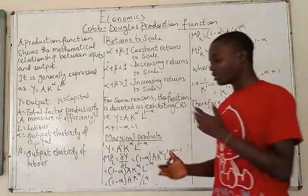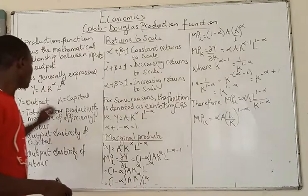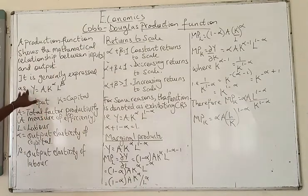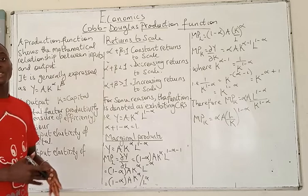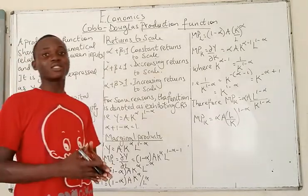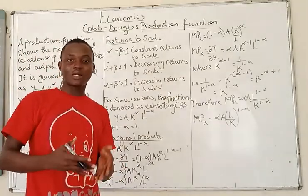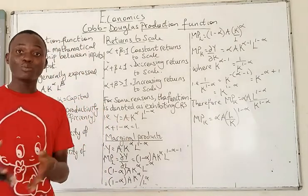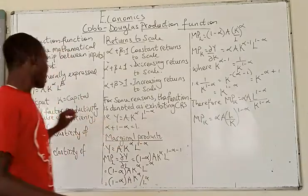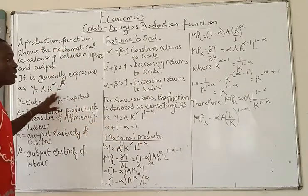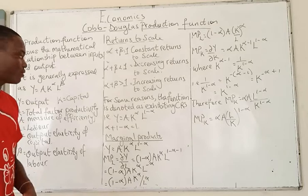Now, marginal products — there is a way to obtain marginal products from this function. What is marginal product? Marginal product is simply the change in total product as a result of a unit change in the input used. Marginal product varies according to the number of units of inputs available. Since we are talking about capital and labor here, we will have the marginal product of capital and the marginal product of labor.